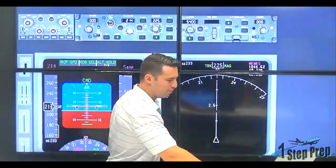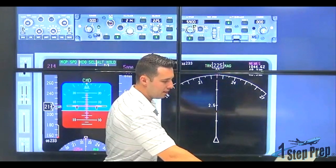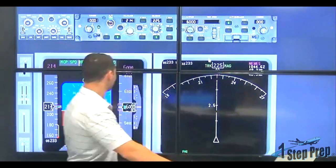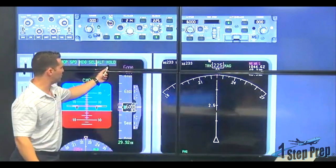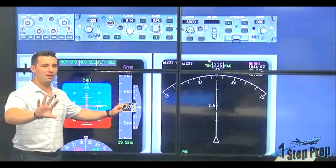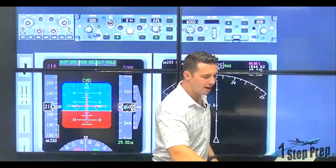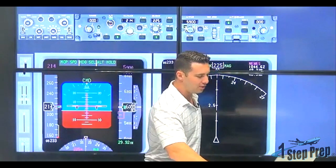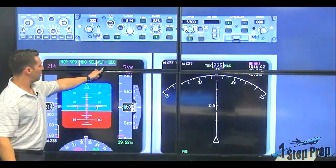Now I'm going to put this back to 6,000 and I want to show you something else. Take a look at the FMA mode. What does it say? Altitude hold. It doesn't say anything else, right? Watch this. The second I move the altitude, watch what arms.